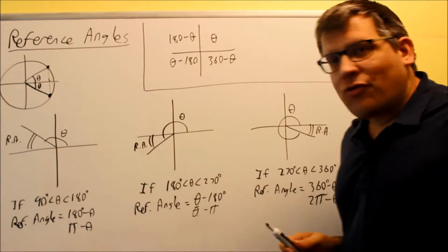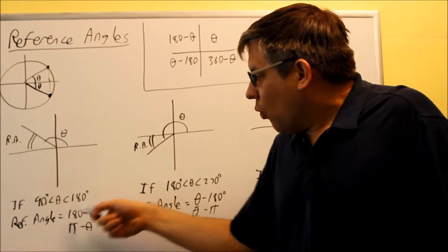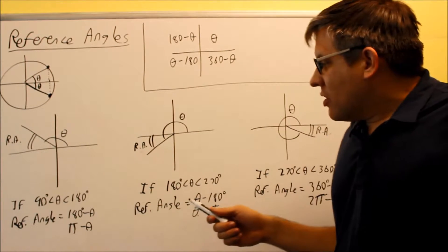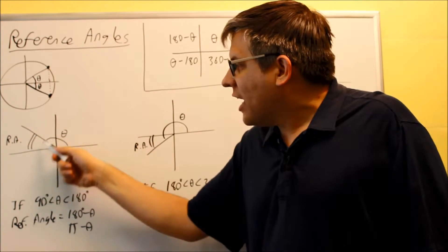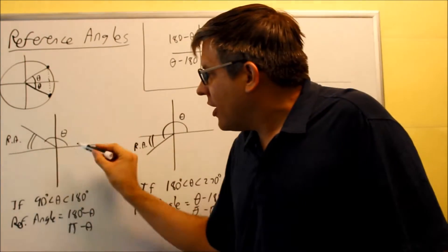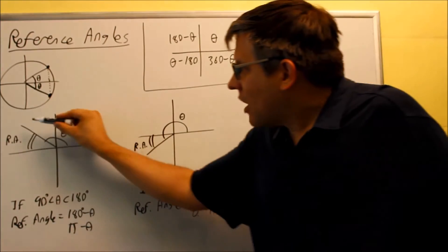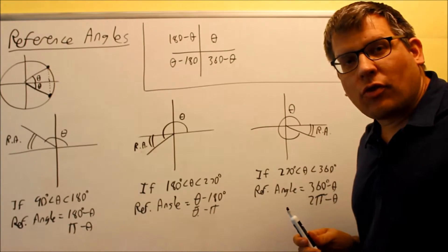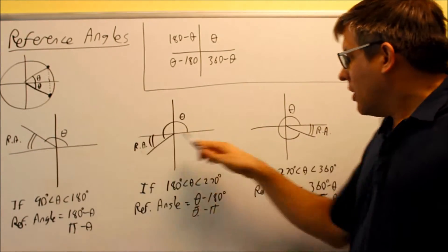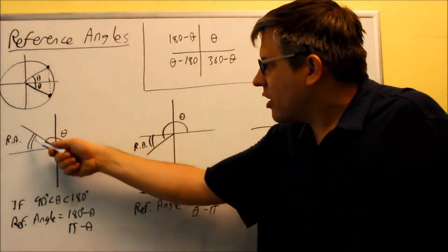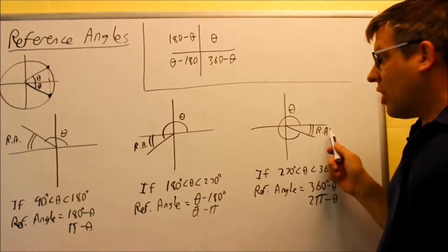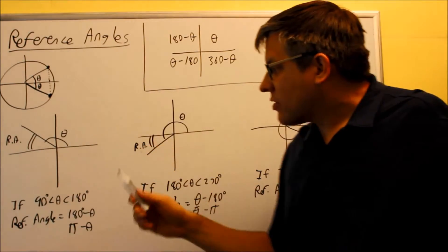First, if you're in the second quadrant, the formula for the reference angle is 180 minus theta, or if we're using radians, pi minus theta. What that does is allow you to find the measurement of an angle here. If I were to draw the line in the first quadrant, it would have the same exact y value, and the x values would differ only by a sign. The reference angle is labeled on all three pictures — it is the measurement from where the angle ends to the closest x-axis, and we use the formula 180 minus theta.